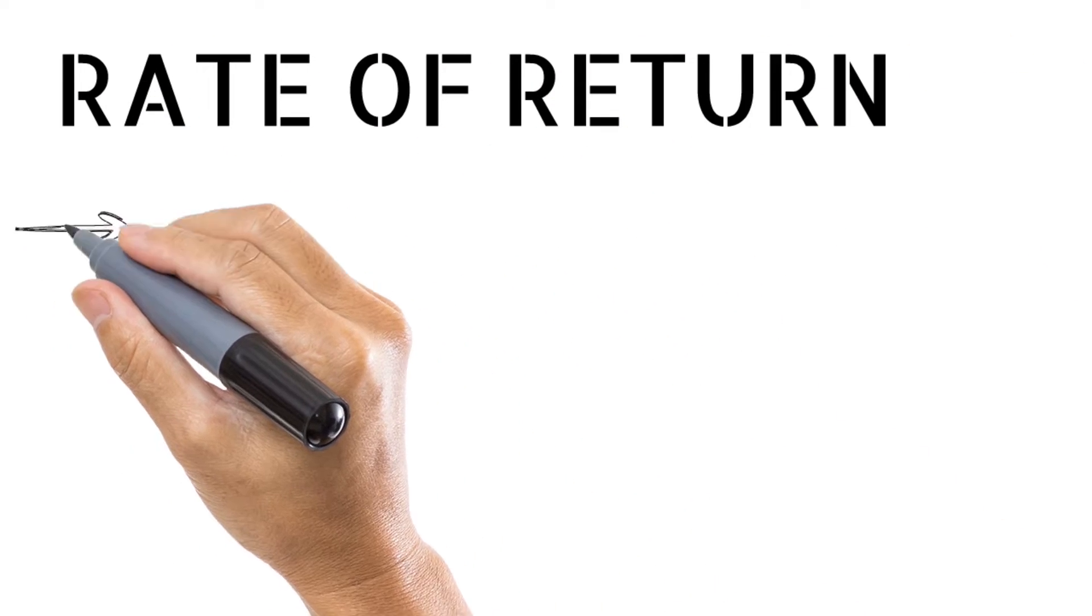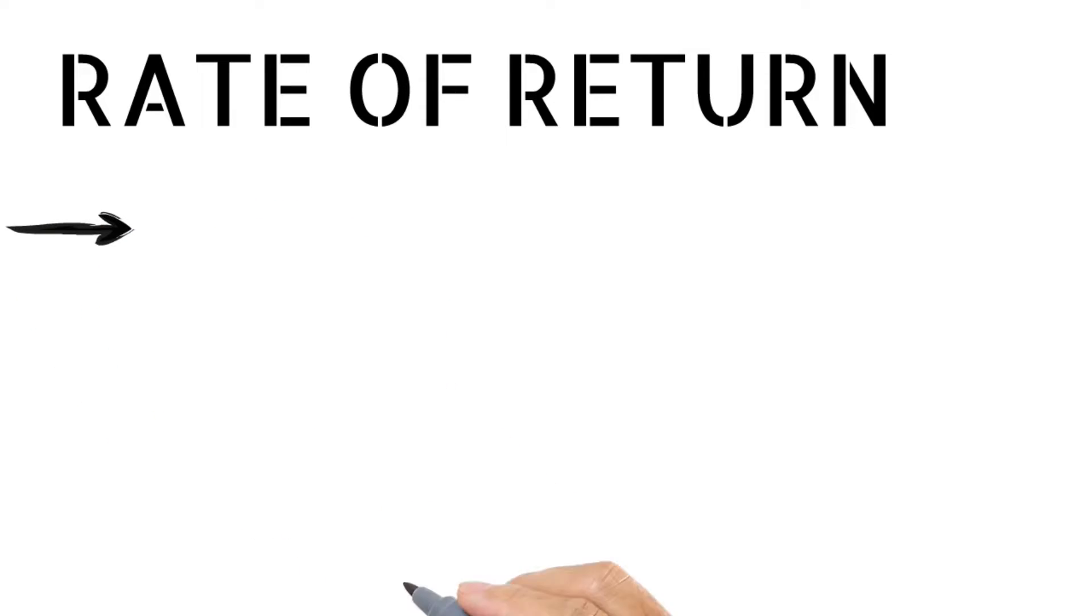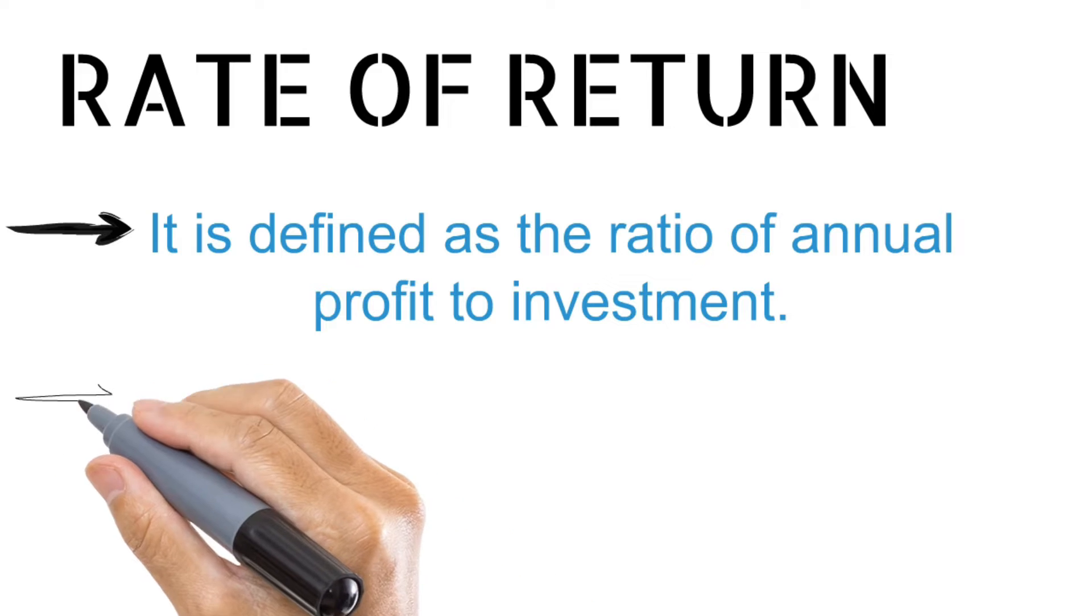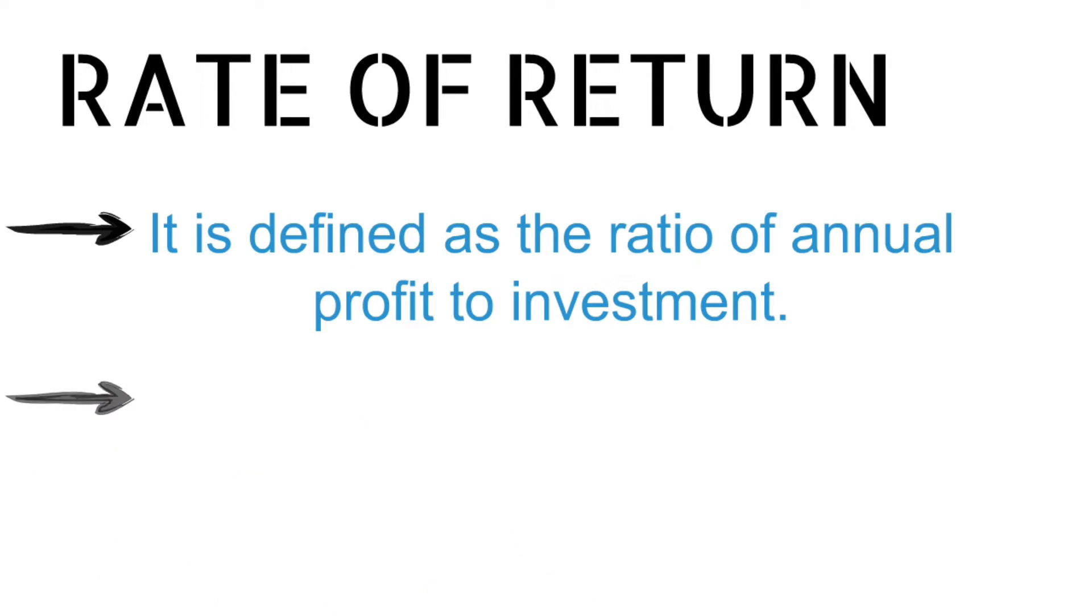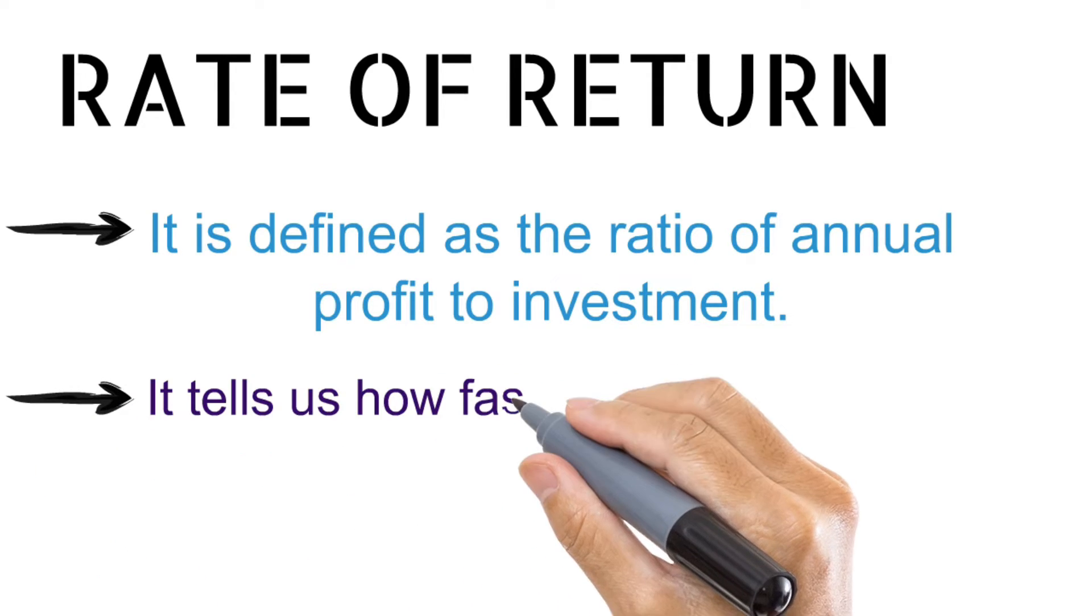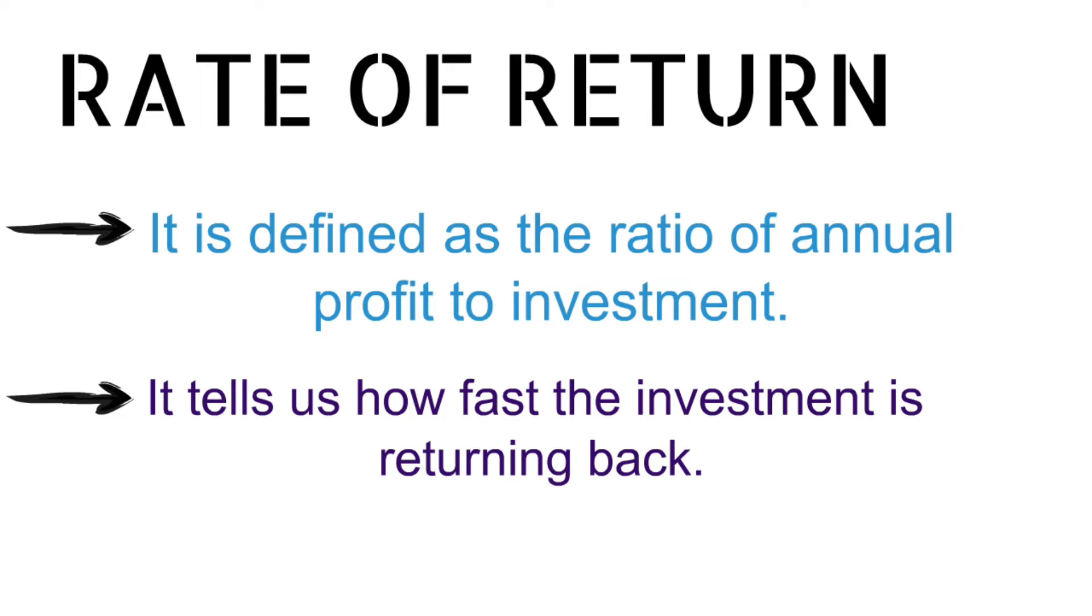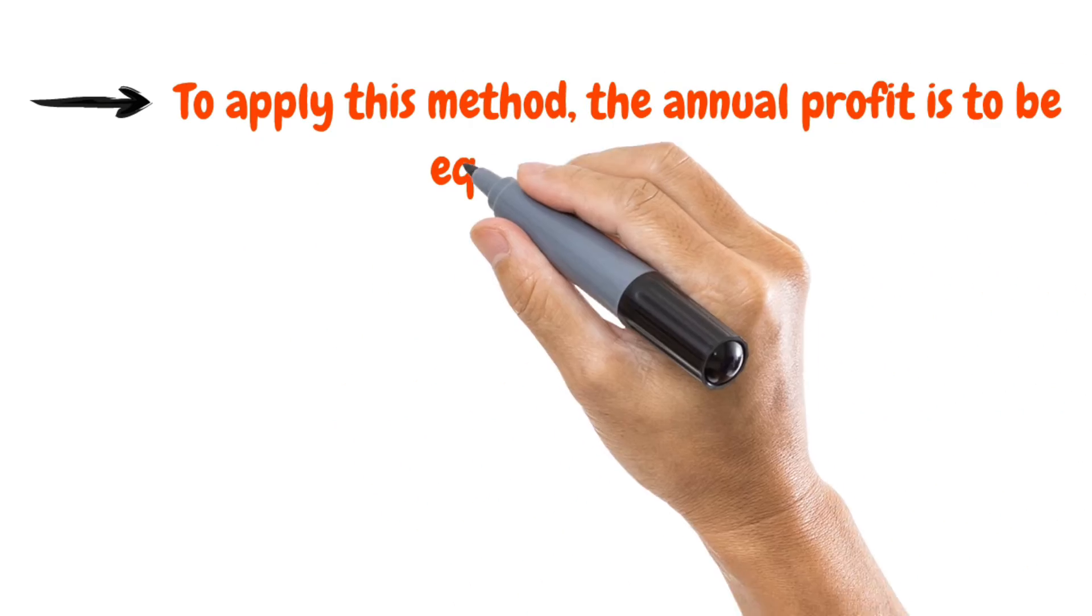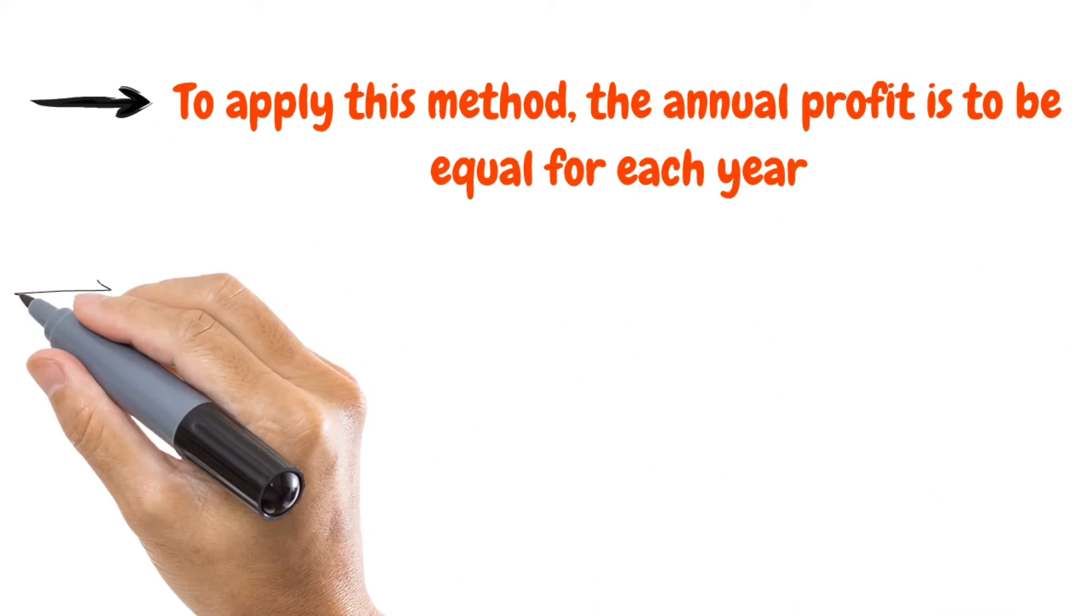It can be defined as the ratio of annual profit to investment. It tells us how fast the investment is returning back. To apply this method, the annual profit is to be equal each year.